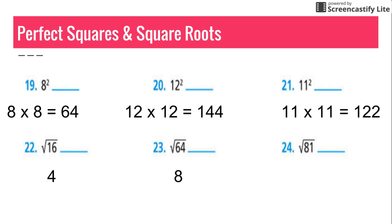And then lastly, we have the square root of 81. You're just taking that backwards. You're pulling it apart. You're looking for that number times itself that equals 81. And if we know our math facts, we know that 9 times 9 equals 81. So the square root of 81 is just 9.